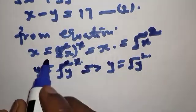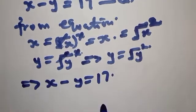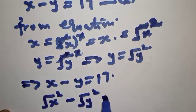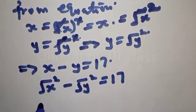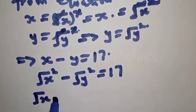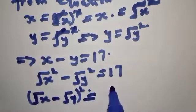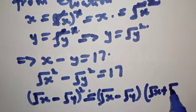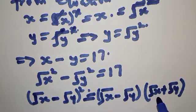This implies that from equation 2, X minus Y equals 17 can be rewritten as square root of X squared minus square root of Y squared equals 17. This is a difference of two squares, which can be expressed as: square root of X minus square root of Y, multiplied by square root of X plus square root of Y.